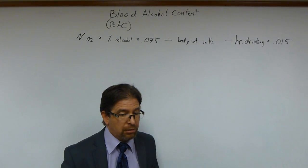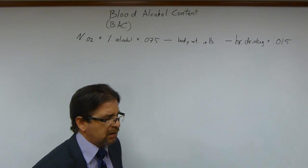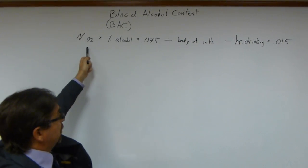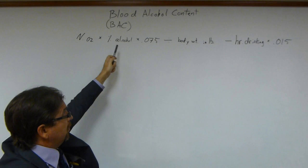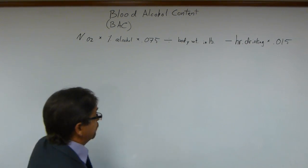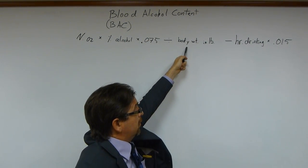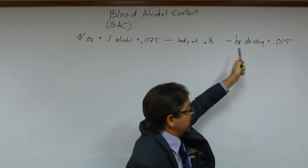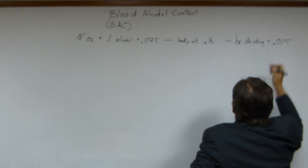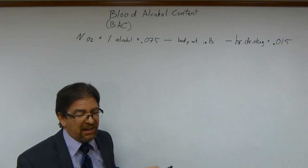Here we're going to take a look at the blood alcohol content problem that many students find difficult. The formula given is: number of ounces of alcohol times percentage of alcohol times 0.075, divided by body weight measured in pounds, minus hours of drinking times 0.015. This isn't the greatest mathematical notation, but it's something you'd find out in the real world.